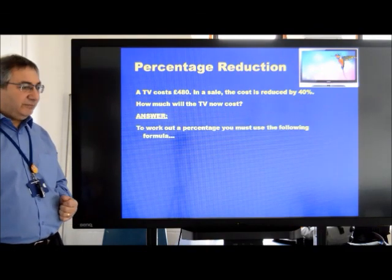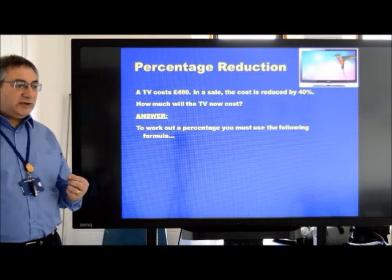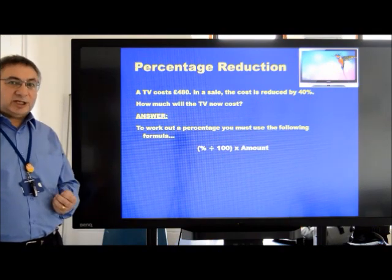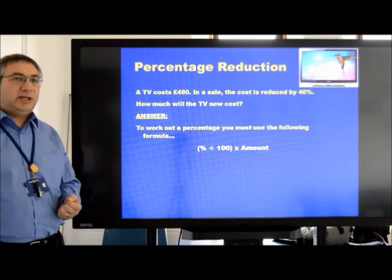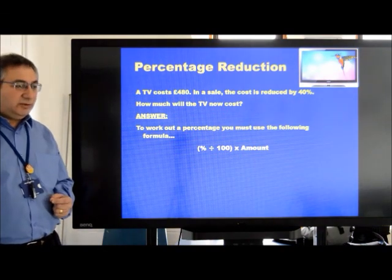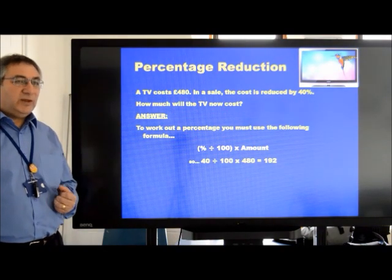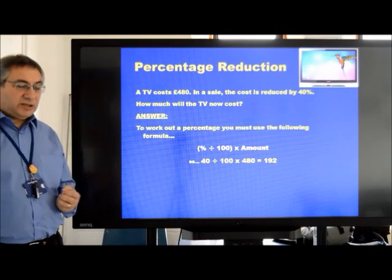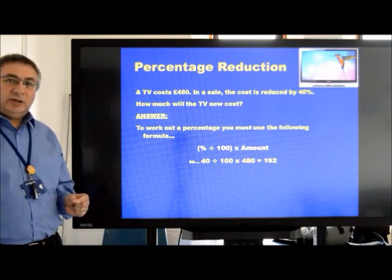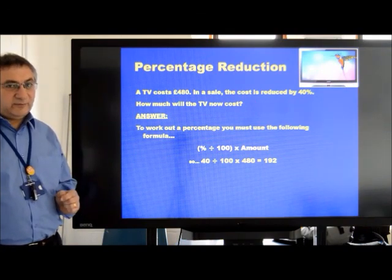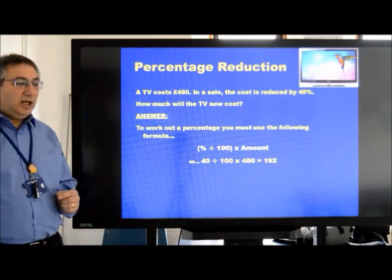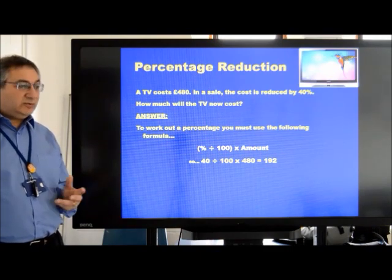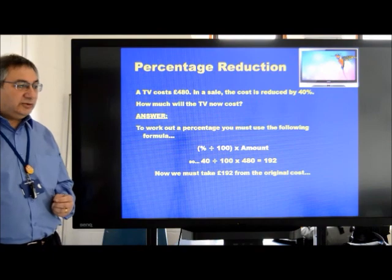Here's how we go about it. To work out the percentage, we must use the following formula as we have already established, that same percentage formula. Percent divided by one hundred, multiply by the amount. In this case, we have forty, our percentage, divided by one hundred, because it's always a part of a hundred as a fraction. Then we multiply that by four hundred and eighty to get one hundred and ninety-two.